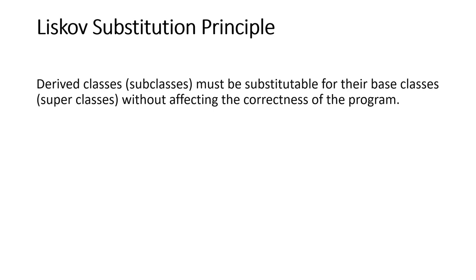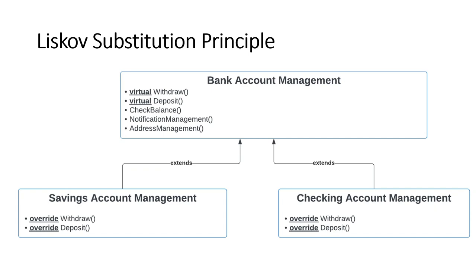The Liskov Substitution Principle states that derived classes or subclasses must be substitutable for their base classes or superclasses without affecting the correctness of the program. In this example, the bank account management class has five methods: withdraw, deposit, check balance, notification management, and address management. The child classes — savings account and checking account — only want to override withdraw and deposit. In C#, the keywords virtual and override help achieve this: virtual in the base class indicates the method can be overridden, and override in the child class indicates it will be overridden.